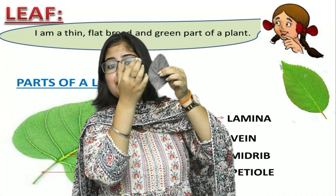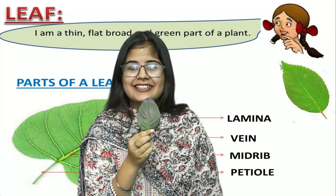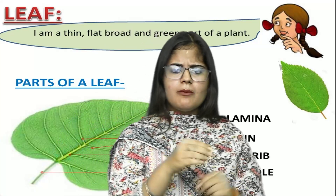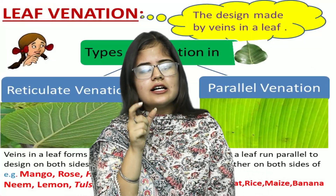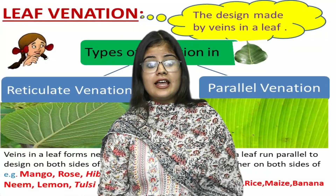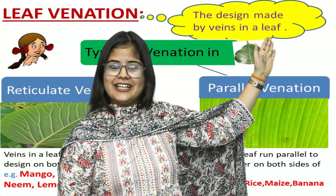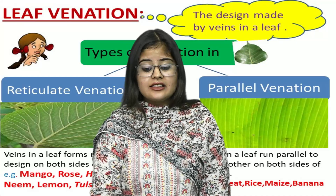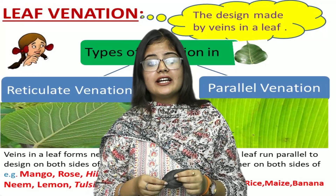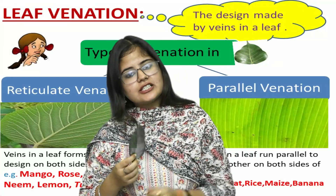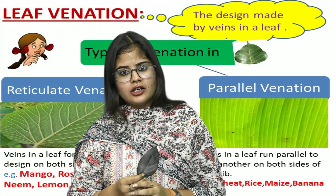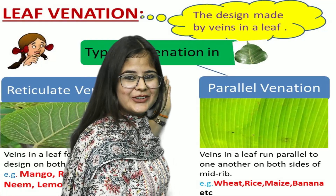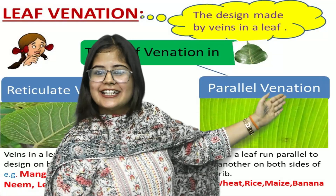When we talk about veins, there is a term associated with them — venation. What is venation? The design made by veins in a leaf is called venation. Venation is of two types: the first is reticulate venation and the second is parallel venation.